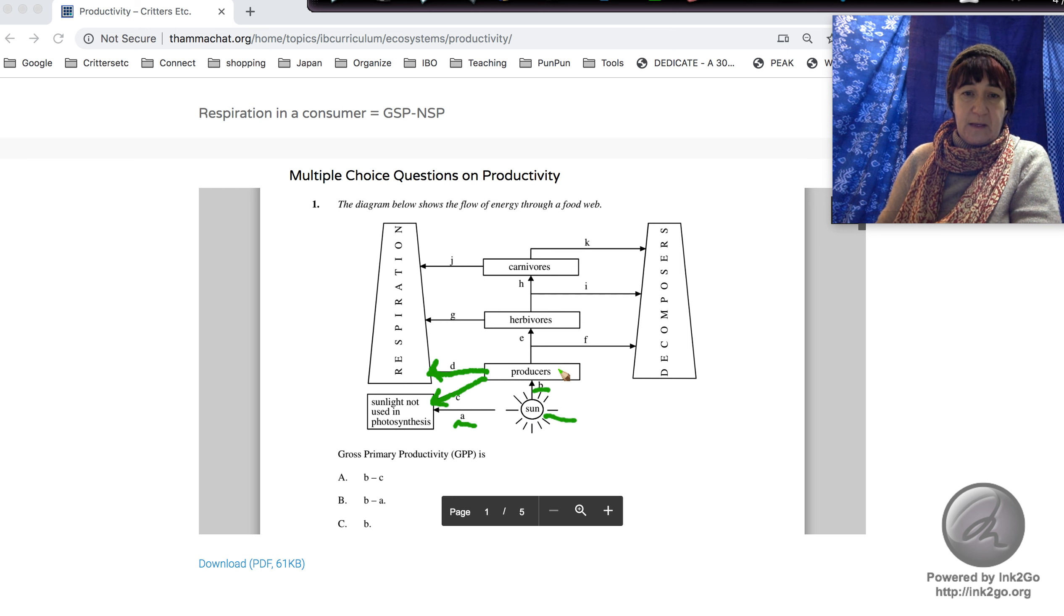We lose some there, and then the rest of the energy is going to be passed on to herbivores, whether they eat it after the plant dies or while the plant's living. Those are the routes of the energy flow.